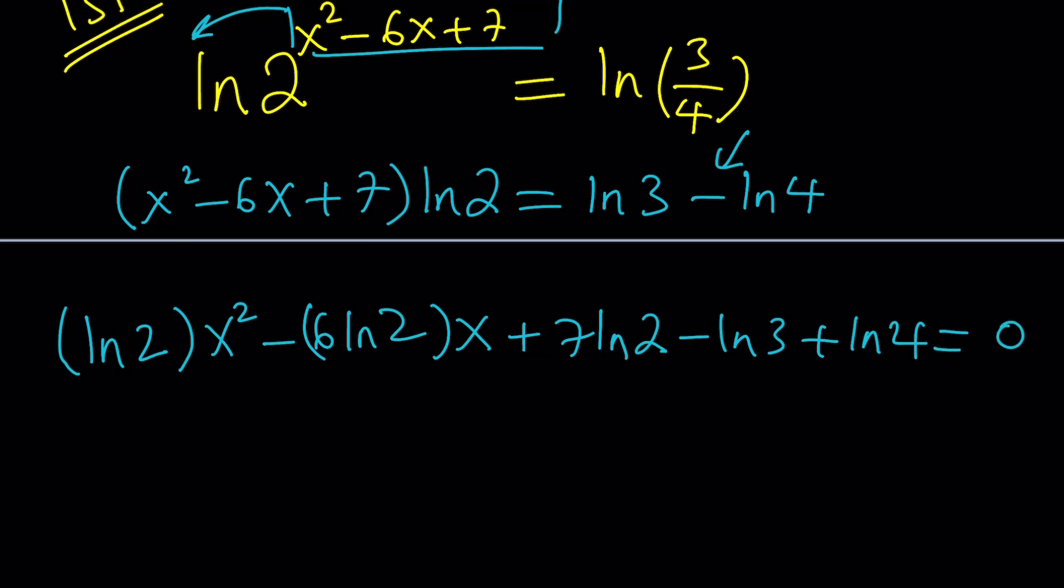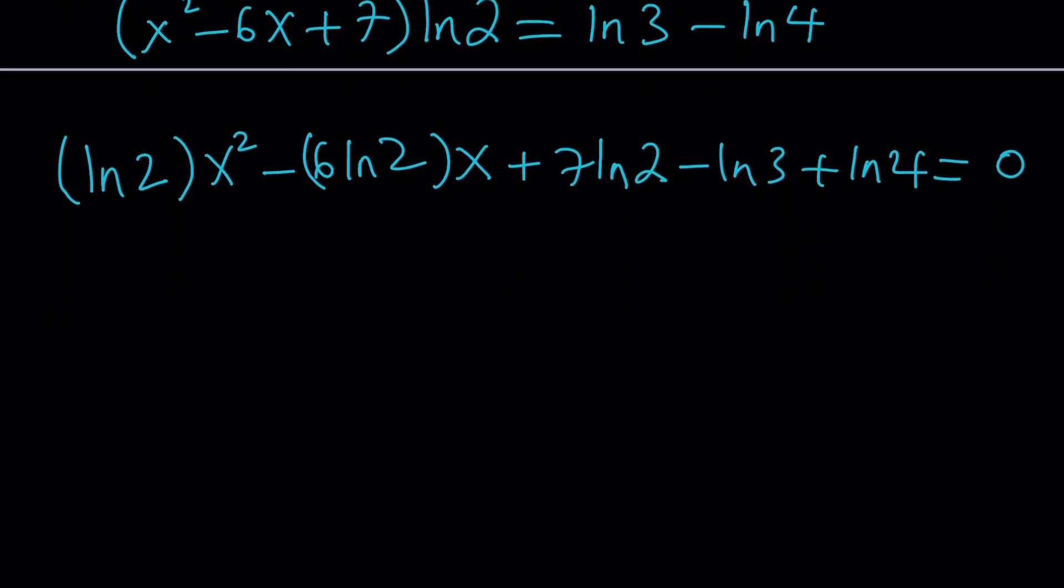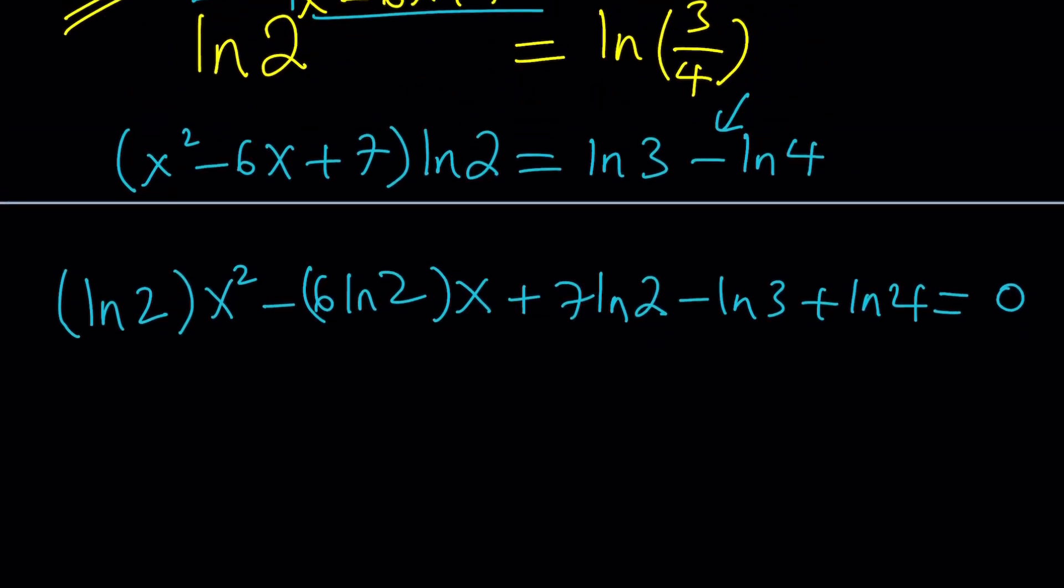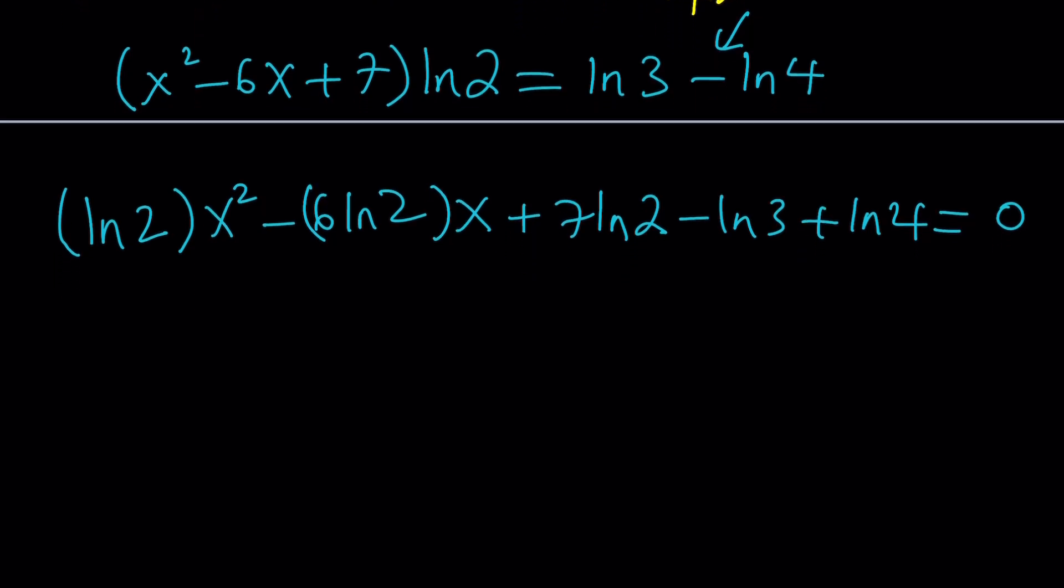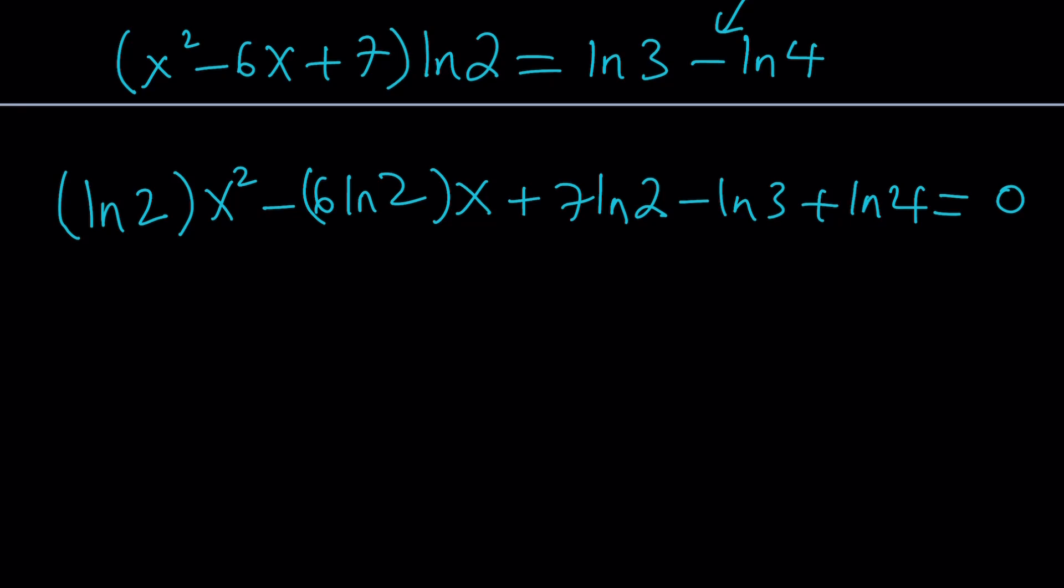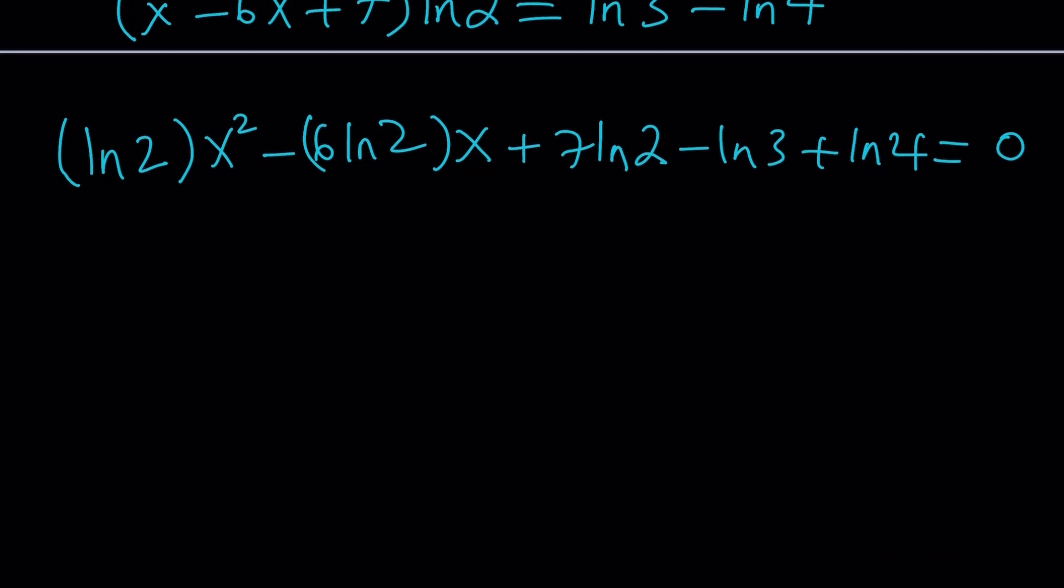So far so good? Now how do we solve the quadratic? We need to use the quadratic formula because even if this is factorable it's not easy to factor directly. But there's something we can do before we write the quadratic formula and that is simplifying the constant term. Because ln 4 is ln 2 squared which can be written as 2 ln 2. We have 7 ln 2 plus 2 ln 2 which gives us 9 ln 2.